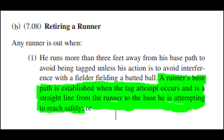As you can see from that clip, no tag attempt was made. Therefore, the base path is whatever the runner wants to do, because there is no base path, and so he cannot be out for being three feet away from a base path because there was no tag attempt made.